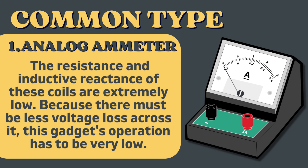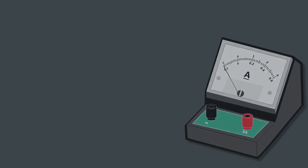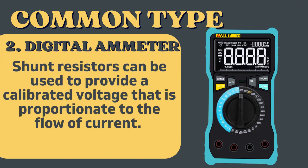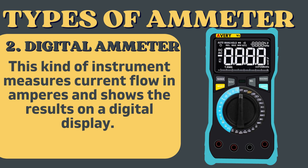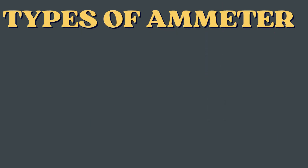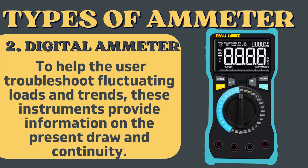There are two common types of ammeter. First, the analog ammeter, whose coils have extremely low resistance and inductive reactance to minimize voltage loss. Second, the digital ammeter, which uses shunt resistors to provide a calibrated voltage proportionate to the flow of current, measuring current in amperes and showing results on a digital display.